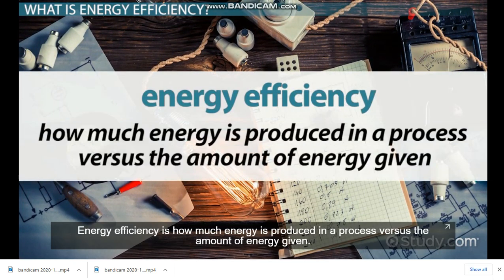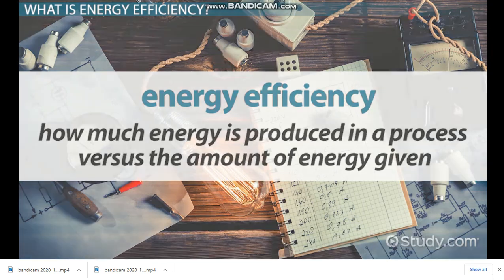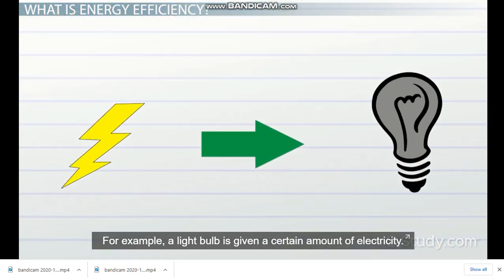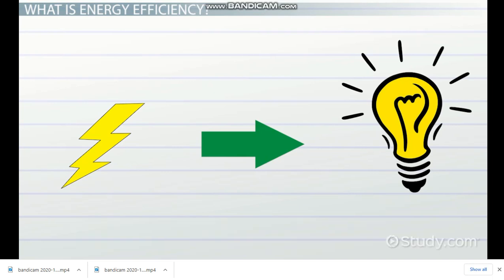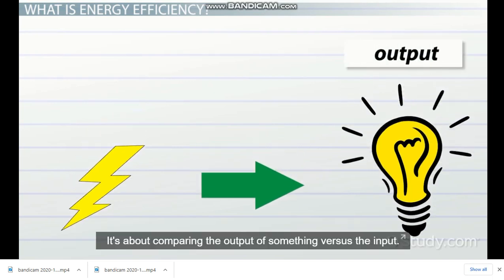Energy efficiency is how much energy is produced in a process versus the amount of energy given. For example, a light bulb is given a certain amount of electricity. Energy efficiency is about how much of that electricity gets turned into useful light. It's about comparing the output of something versus the input.